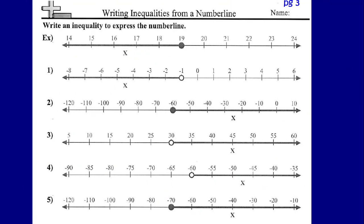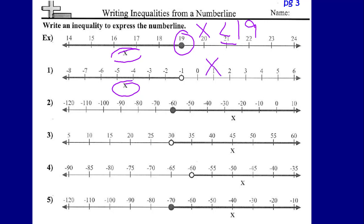Look at your packet — turn to page 3. This page is part of tonight's homework assignment. Let's look at the example they have done for us. We're going to write the inequality expressed on the number line. The x value line is to the left, or less than 19, so x is less than 19. Looking at the circle, it is a closed circle, therefore 19 is a possible solution for x, so x is less than or equal to 19. Looking at number 1, the x solution line goes to the left of negative 1, which means x is going to be less than negative 1. The circle at negative 1 is empty or open, so negative 1 is not part of the solution set, and our inequality remains x is less than negative 1.